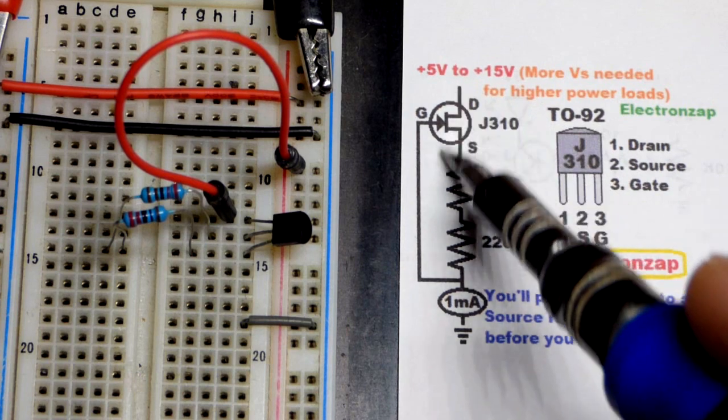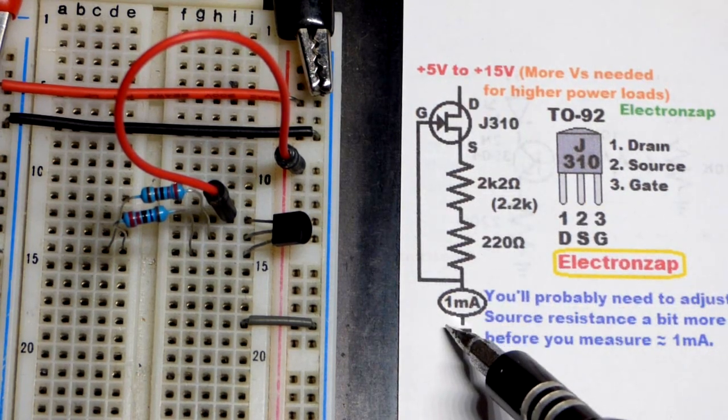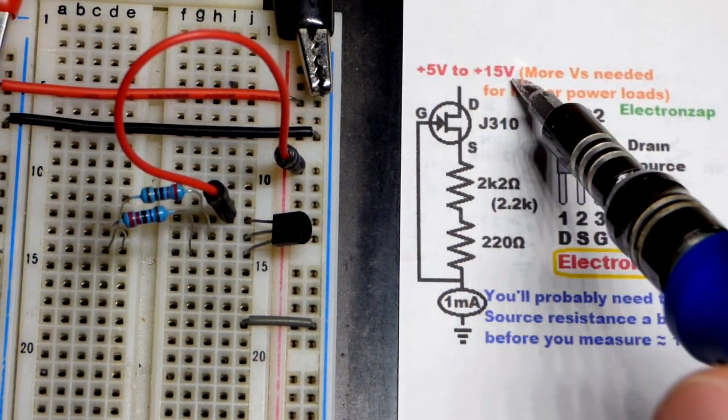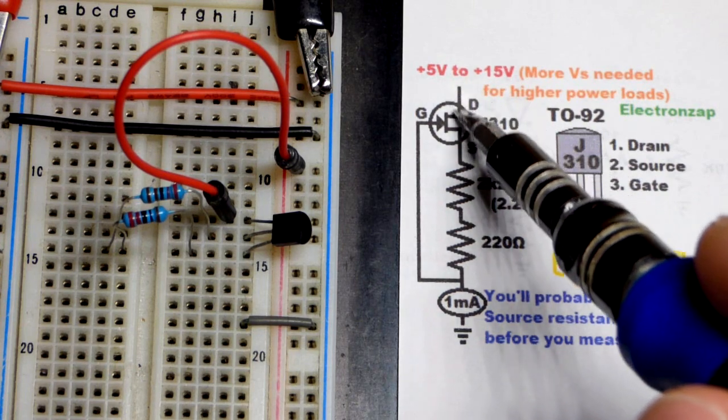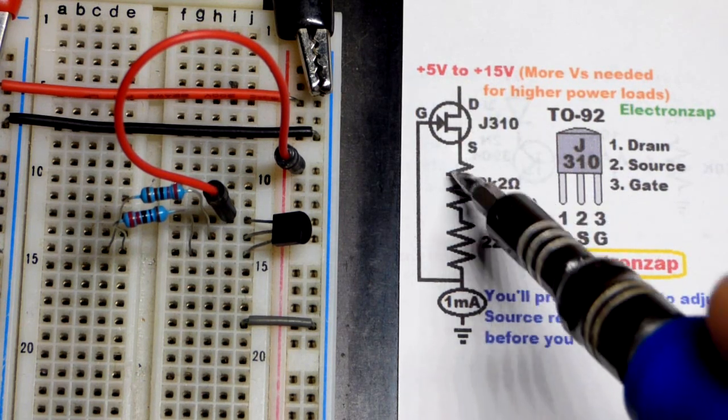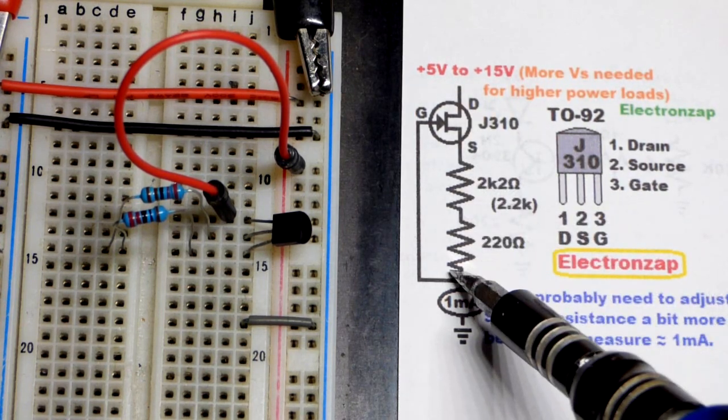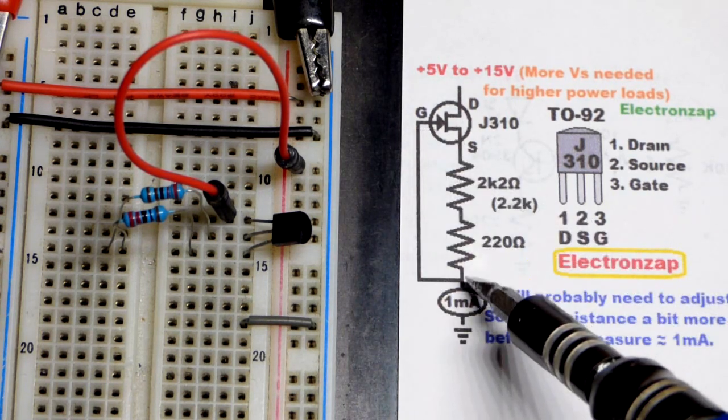We will have a current that is set through the component, regardless of voltage, as long as you have enough voltage to power everything, by putting some resistance between the source and ground. The gate is connected directly to ground.